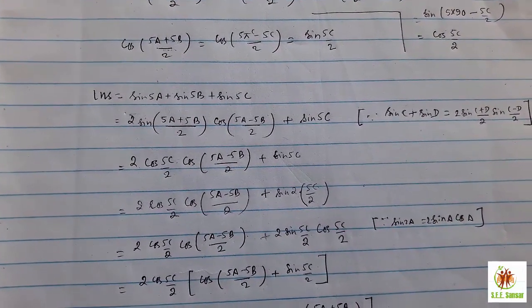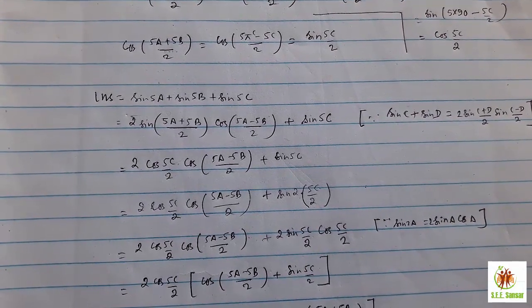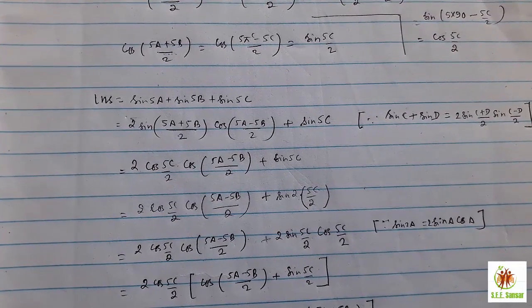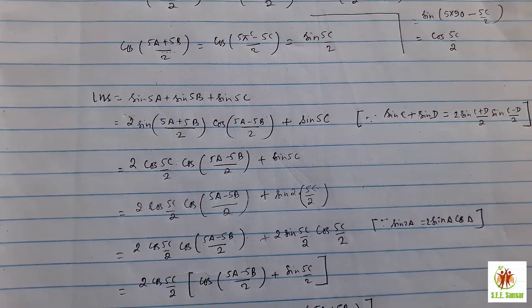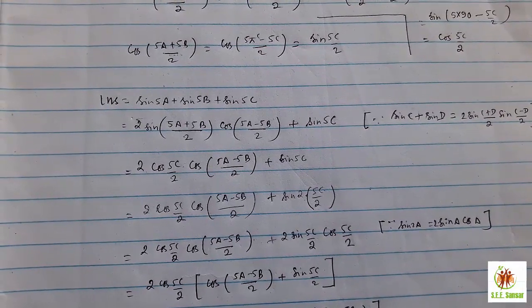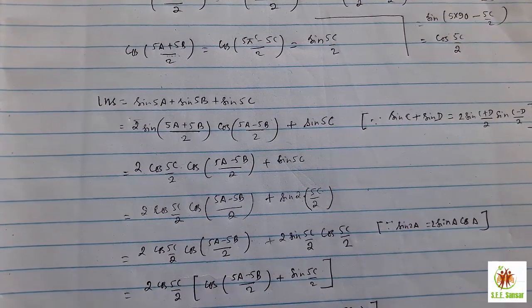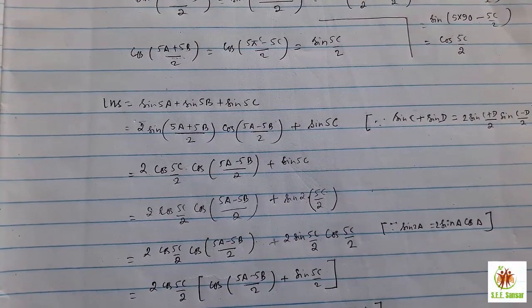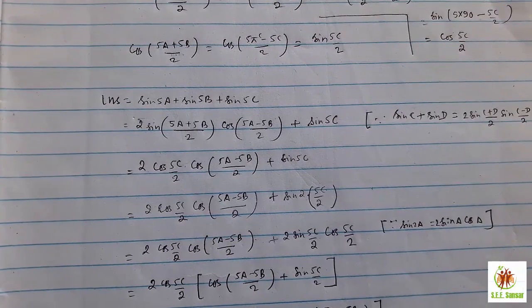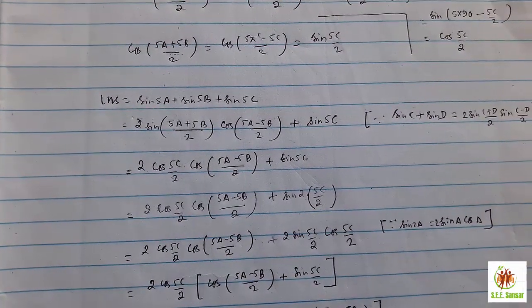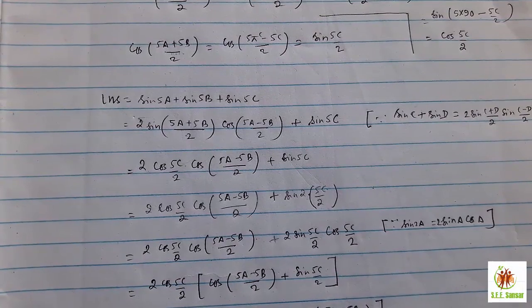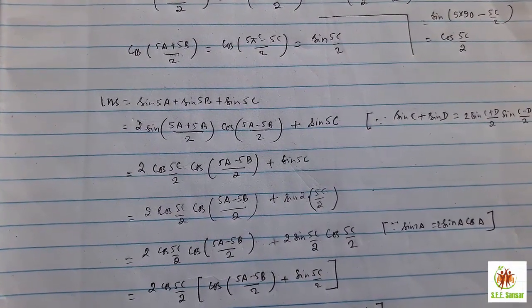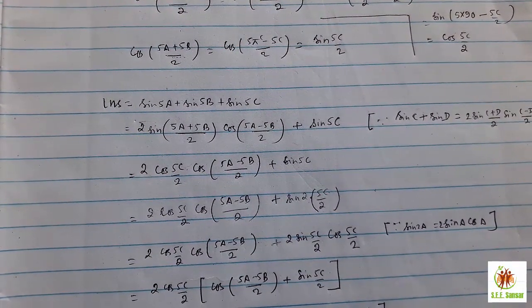This time we need sin c plus sin d. So when you use the formula of sin c plus sin d, it's 2 sin c plus d upon 2 cos c minus d upon 2. So when you consider 5a as sin c, sin 5b as sin d, then use the formula, then we will get something like 2 sin 5a plus 5b by 2 cos 5a minus 5b by 2 plus sin 5c. I'm talking the general method of solving this problem. At first, what you should use? You should use the formula of sin c plus sin d.